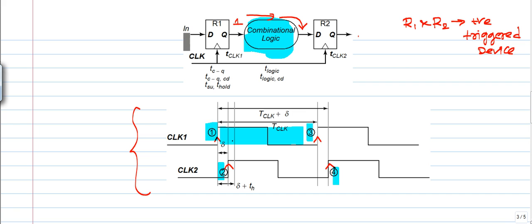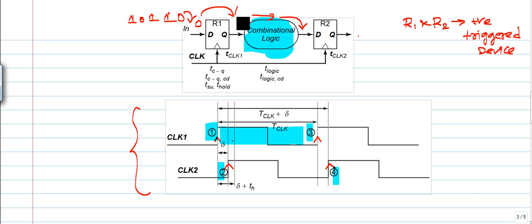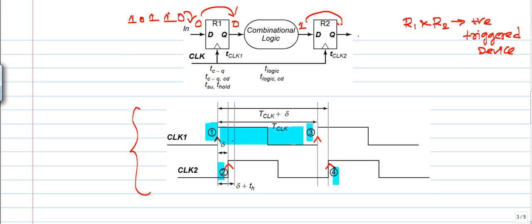Since register R1 is connected to the input side, an input sequence is coming in. Initially, 1 is transferred; then 0 comes next. When R1 and R2 receive points 3 and 4, this 0 is transferred through R1, and a computed value from the combinational logic is transferred through R2 to the output.